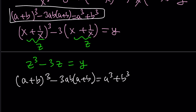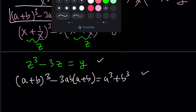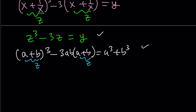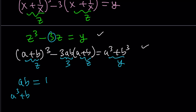We're going to compare these two equations. If you rename a plus b as z, and compare the two equations, you'll notice the coefficient of z is negative 3 here, and negative 3ab on the other side. Ignoring the negatives, this means 3ab equals 3, so ab equals 1. And this gives us a plus b equals z, and a cubed plus b cubed equals y.